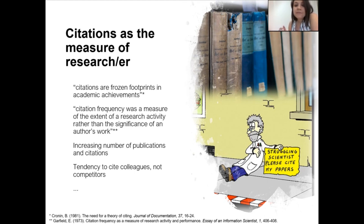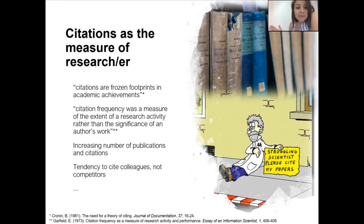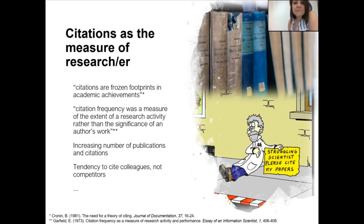But today we are facing a publication explosion and the 'publish or perish' culture. Scholars try to publish papers without concerning their quality or contributions to science. This creates different practices like manipulations, citation gangs, citation games, and tendencies to cite colleagues rather than competitors. There are too many different kinds of manipulations we can find in academia, thanks to the number obsession.